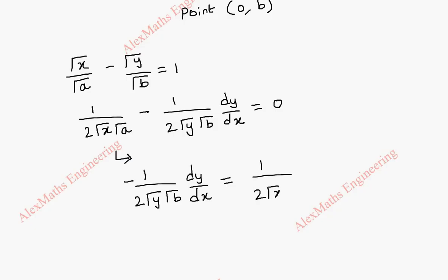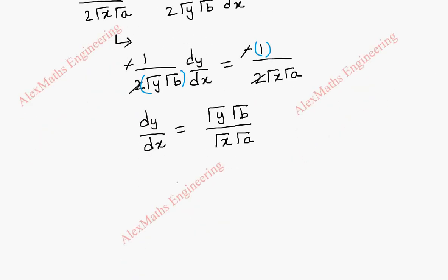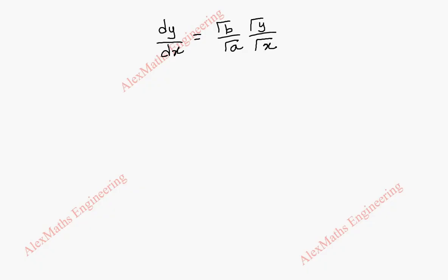We take this term to the other side: 1 by 2 root y root b into dy by dx equal to 1 by 2 root x root a. We cancel the 2s, and the negative sign also cancels when we move the term. Multiplying root y and root b across gives dy by dx equal to root y root b by root x root a. We rewrite this keeping the constant separate as root b by root a into root y by root x, which makes the second differentiation easier.